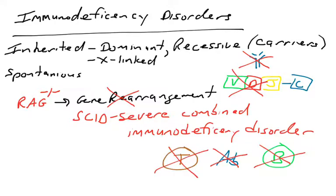They also don't make T cells because RAG is also used for T cell receptor gene rearrangement. So if you inherit bad copies of the RAG genes and they're non-functional, you will not have any adaptive immunity, no humoral immunity, no cell-mediated immunity.